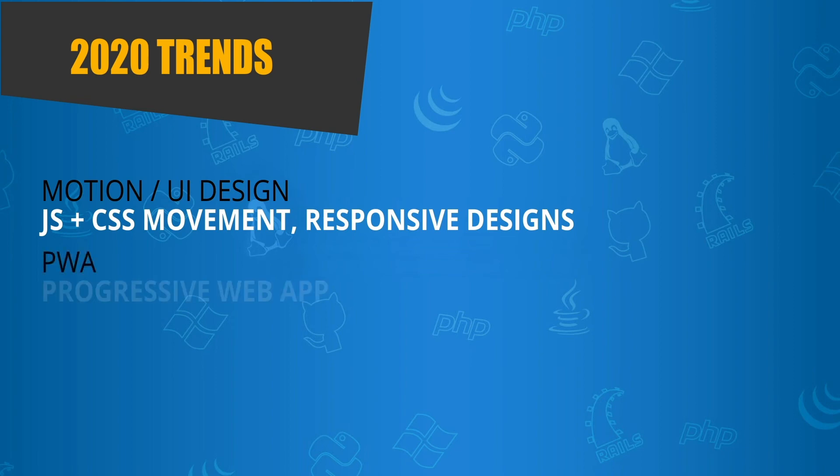PWA, or progressive web apps, are becoming more popular, especially with Google's introduction of AMP. Basically, a PWA is a small app based on your website that can run offline using application workers. You can create a website and allow people to quickly and efficiently view it, even with a poor internet connection.